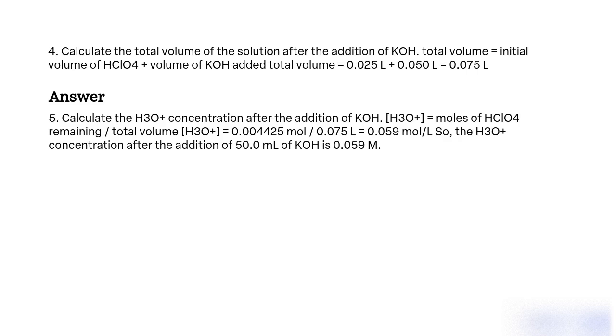Calculate the H3O+ concentration after the addition of KOH. H3O+ equals moles of HClO4 remaining divided by total volume. H3O+ equals 0.004425 mol divided by 0.075 L equals 0.059 mol/L. So the H3O+ concentration after the addition of 50.0 mL of KOH is 0.059 M.